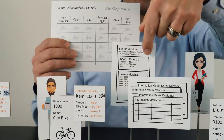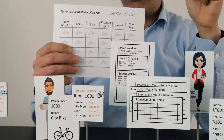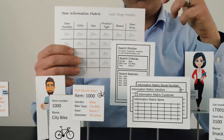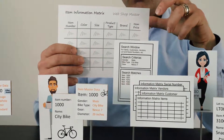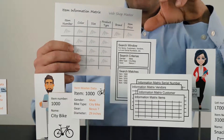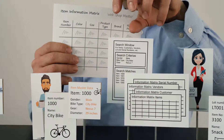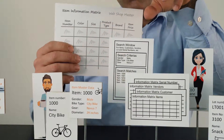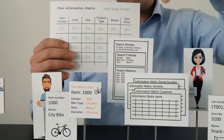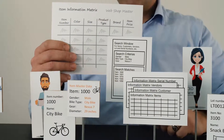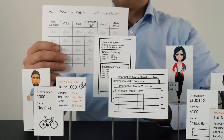From the search window, it's possible to do all those complex searches, filtering on item fields, on information code fields, etc. So you can define very precisely which items you're going to update in your information matrix. That's a very cool tool.